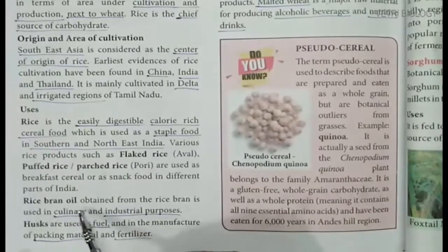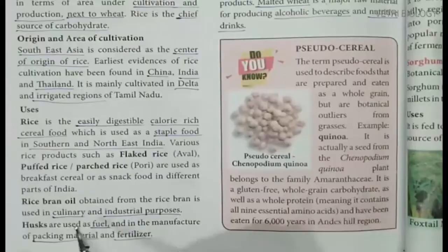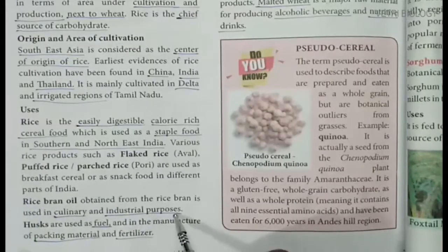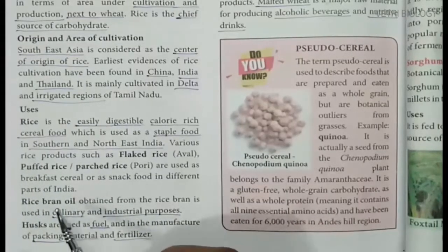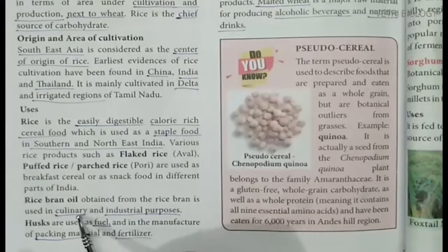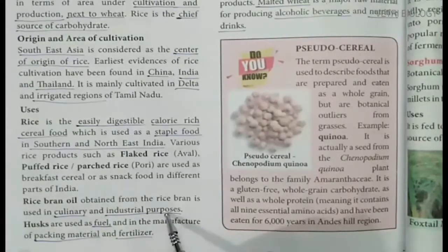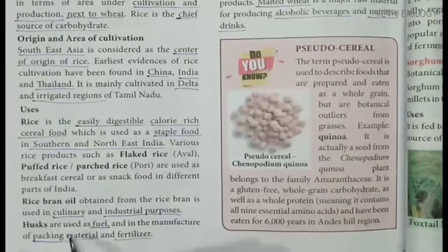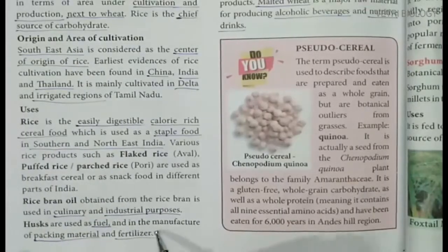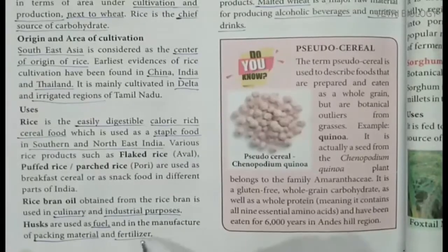Rice bran oil obtained from the rice bran is used in culinary and industrial purposes. Husks are used as fuel and in the manufacture of packing material and fertilizer.